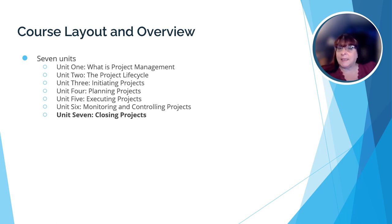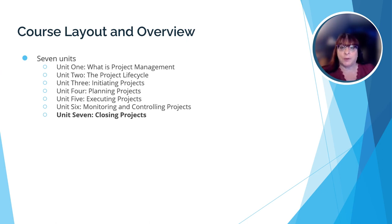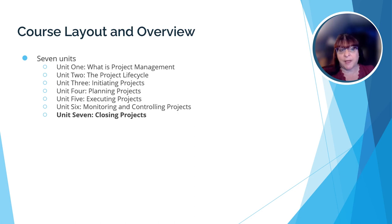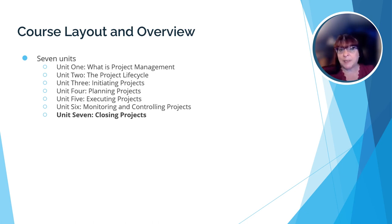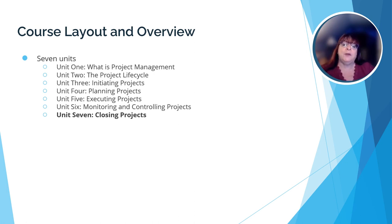There are seven units in this course. In Unit 1, we learned what a project is, who makes the decision to take a project on, and what the triple constraint theory is. In Unit 2, we were introduced to the project life cycle. In Unit 3, we looked at the initiation phase. In Unit 4, we looked at the planning phase. In Unit 5, we looked at the execution or implementation phase. In Unit 6, we looked at the monitoring and controlling phase. Here in Unit 7, we'll look at the final phase of the project life cycle — the closing phase.